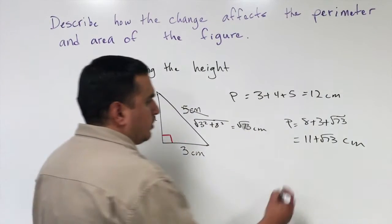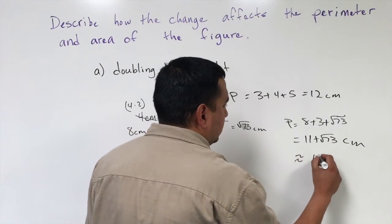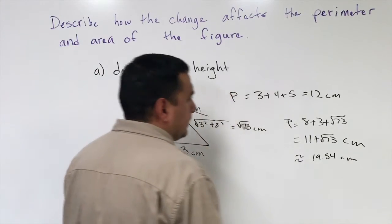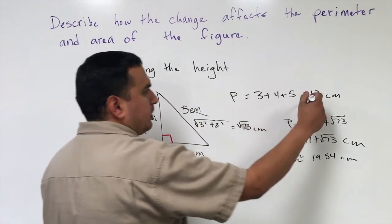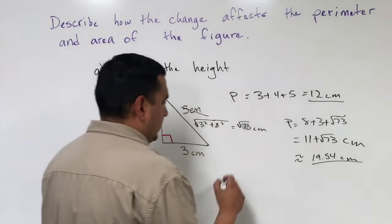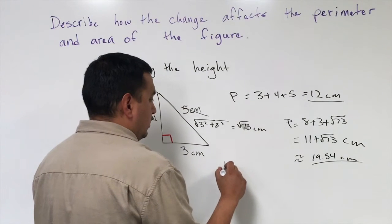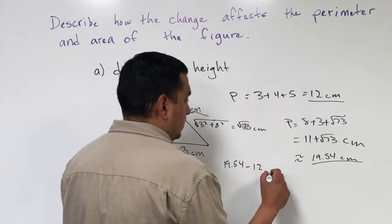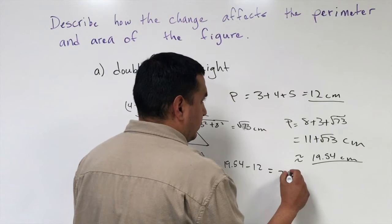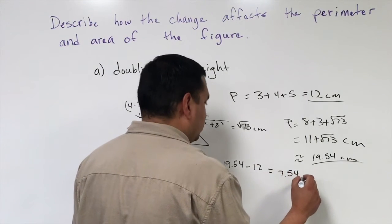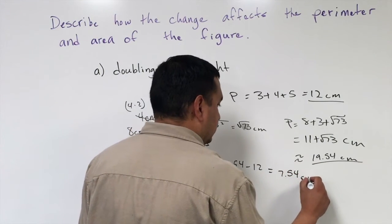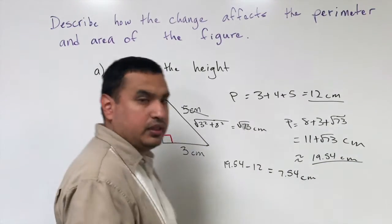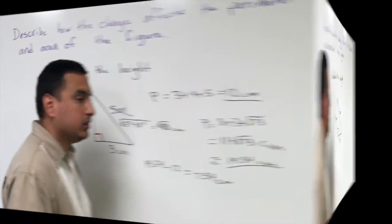If I round it, that's going to be about 19.54 centimeters. I want to compare the 12 centimeters with the 19.54, so I do 19.54 minus 12, which is about 7.54 centimeters. So the perimeter changes by about 7.5 centimeters.